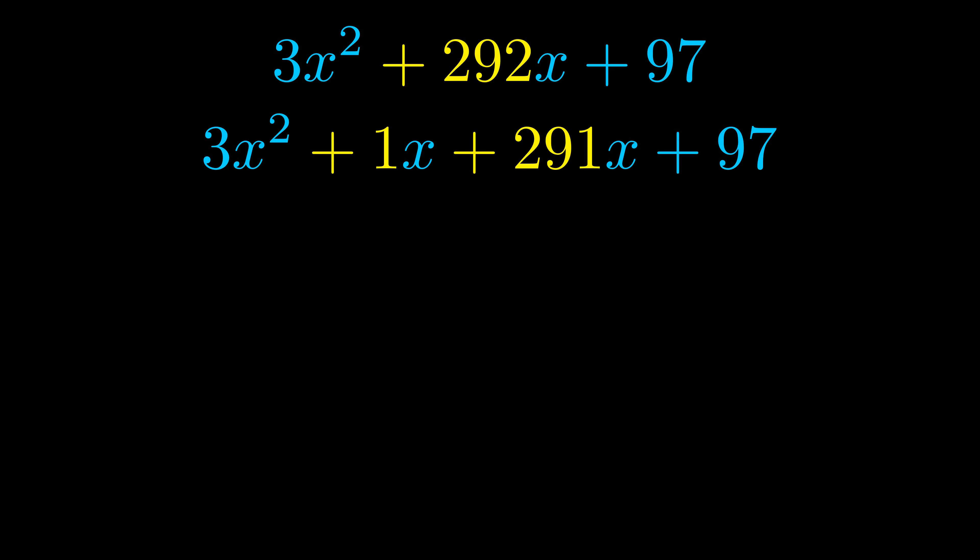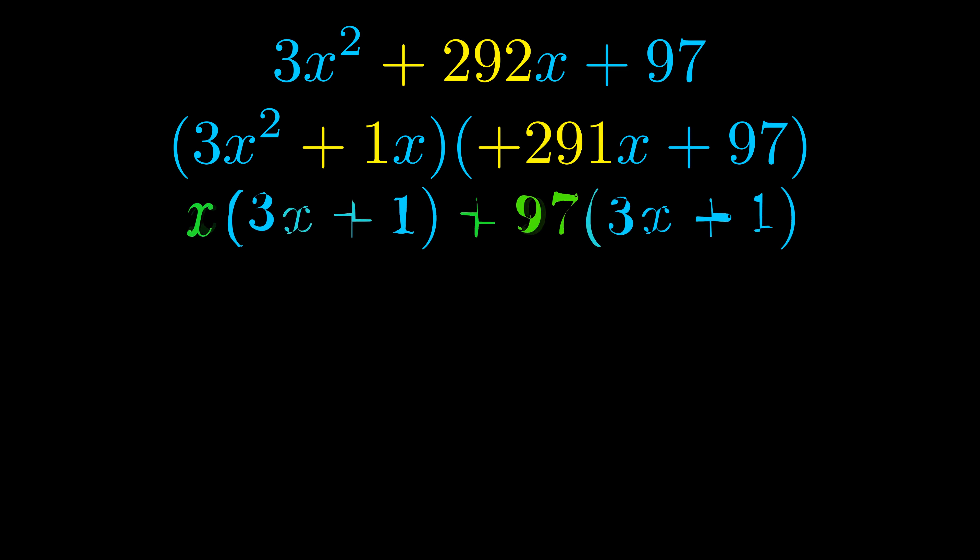Once we've done this we go ahead and we put parentheses around the first term and the last term. And we do that so that we can take the greatest common factor out of both terms. We can see the greatest common factor is now outside in green.